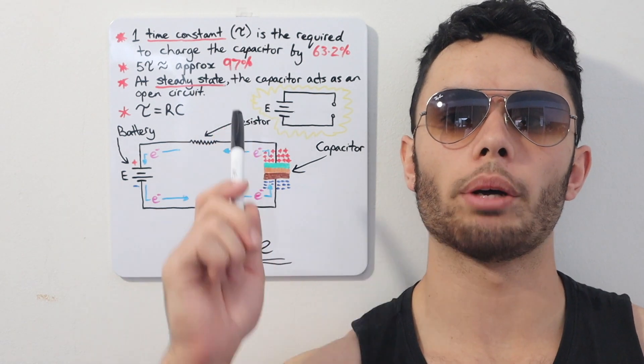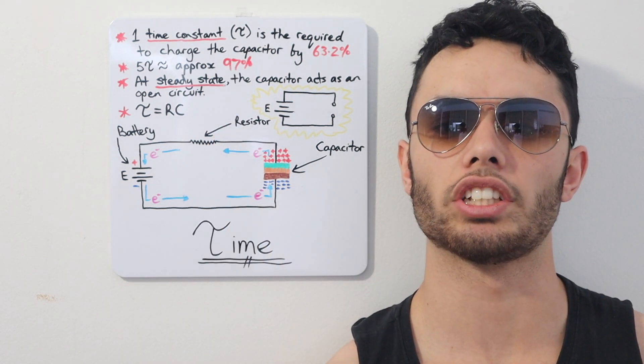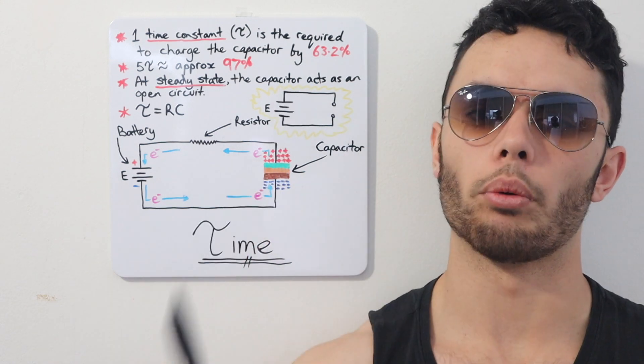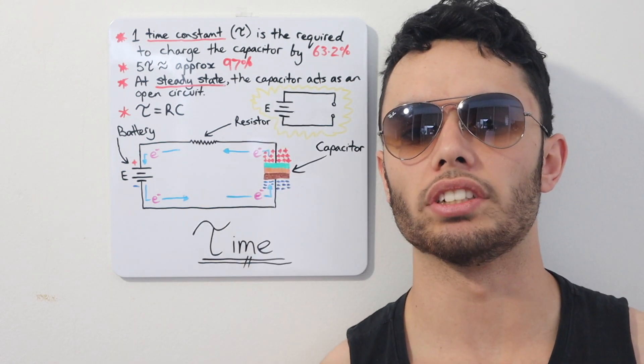So, at approximately five time constants, the capacitor is fully charged at 97%. And when the capacitor is fully charged, it has reached its steady state where the current is zero and the voltage is at its maximum.